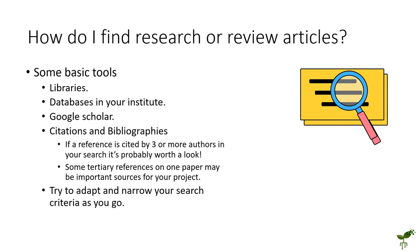Another place you might want to look are the citations and the bibliographies within one paper. So if you find a really useful paper, look in its bibliography, and that might give you some other research papers that you can branch out into. Whichever way you approach your research, being a bit critical is useful. As your research process goes on, try and narrow your research criteria bit by bit to something more specific, and that way you're sort of narrowing things as you go.